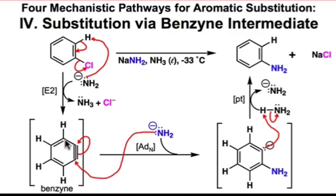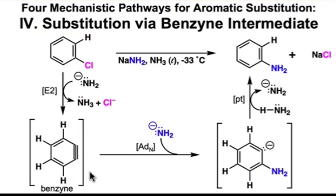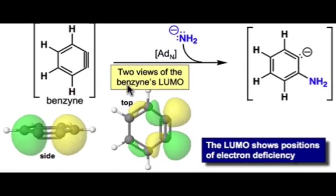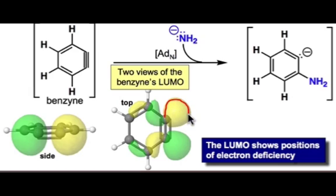If we look at the lowest unoccupied molecular orbital of benzyne, we can see why it's such a good electrophile. The large lobes signify that there's a very large electron deficiency in the plane of the six-membered ring — that's a π bond that's capable of undergoing nucleophile addition.